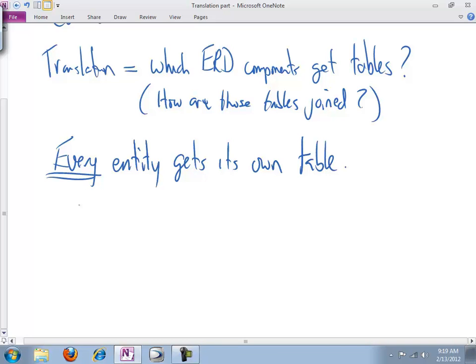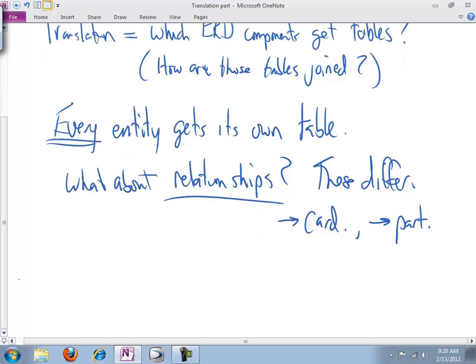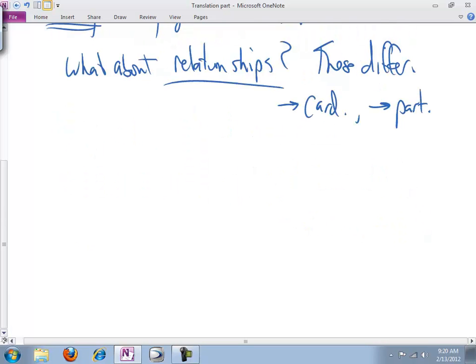What's at issue across the three techniques is: what about relationships? These differ. How do they differ? Based on cardinality and in some cases based on participation. They will differ. And they will differ from one set of cardinality and participation to the next, and they will differ between our translation techniques. But some things are always the case.